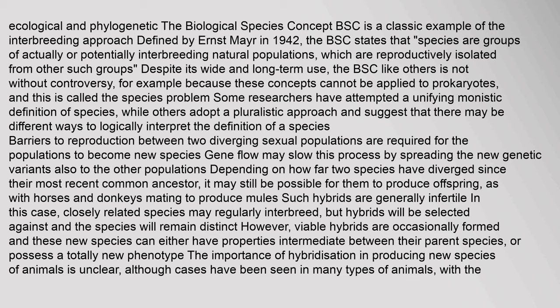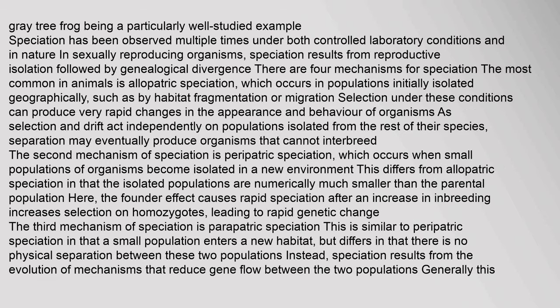Gene flow may slow speciation by spreading new genetic variants to other populations. Depending on how far two species have diverged since their most recent common ancestor, it may still be possible for them to produce offspring, as with horses and donkeys mating to produce mules — such hybrids are generally infertile. Closely related species may regularly interbreed, but hybrids will be selected against and the species will remain distinct. However, viable hybrids are occasionally formed and these new species can either have properties intermediate between their parent species or possess a totally new phenotype. Speciation has been observed multiple times under both controlled laboratory conditions and in nature.